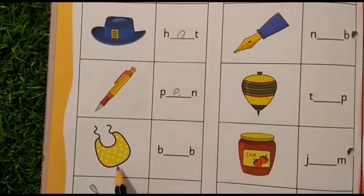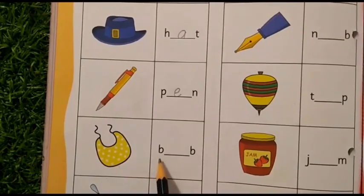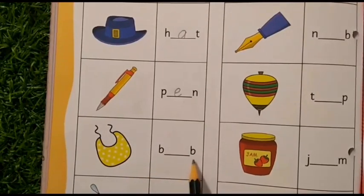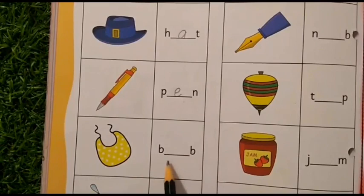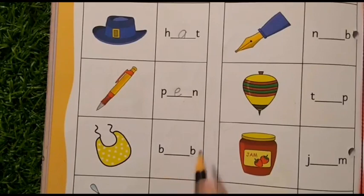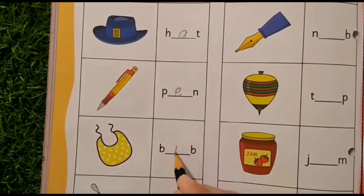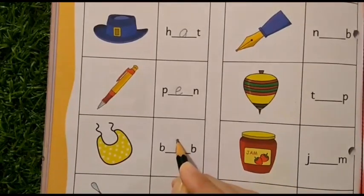Next, what is this? This is a bib. Bib. B is given. B is given. Bib. I. Bib. So, which letter says I? I. So, here we will write the letter I.